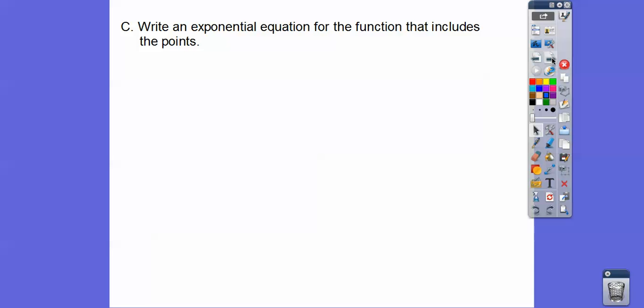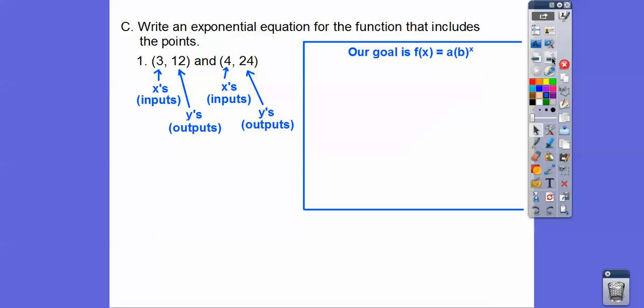Alright, so write an exponential equation for the function that includes the points right here. I was thinking ahead for this right here. So it's going through these two points, and they tell us it's exponential. So the x's are always our inputs, and the y's are always our output values right here. And remember, let's go back to our equation right here. Exponential equations are y equals or f of x equals a times b to the x.